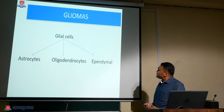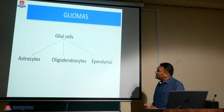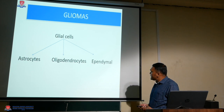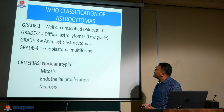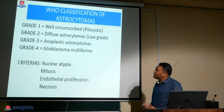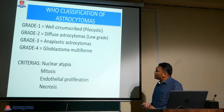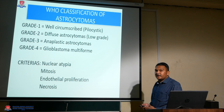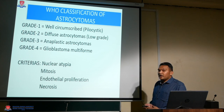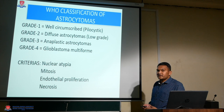The first type of tumor is called glioma. Gliomas originate from glial cells — mostly three types: astrocytes, oligodendrocytes, and ependymal cells. The WHO classifies them into four grades based on severity: grade one is well circumscribed, grade two is diffuse astrocytoma, grade three is anaplastic astrocytoma, and grade four is glioblastoma multiforme. The staging criteria are nuclear atypia, mitosis, endothelial proliferation, and necrosis.